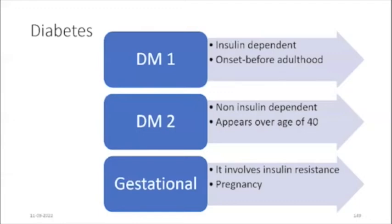Type 2 diabetes usually appears in people over 40 years, although in South Asian and African Caribbean populations it often appears after age 25. Recent studies show more children being diagnosed, some as young as 7. This form of diabetes mellitus is more prevalent in less affluent populations and accounts for 85–95% of all cases.